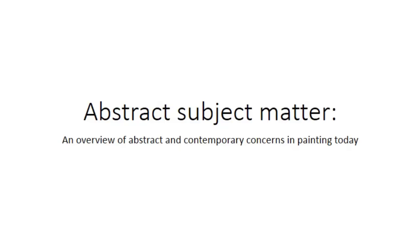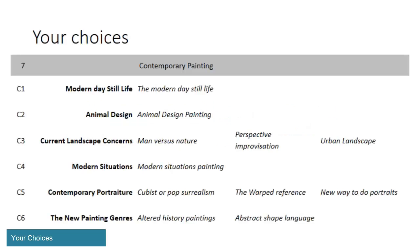Hello, it's Mr. Turek. I'm going to give you a brief overview of Unit 7, which deals with abstract or contemporary subject matter. I'm still going to follow kind of the traditional hierarchy of genres, even though in contemporary painting today that doesn't really hold true. It's still reacted to and still referred to at times.